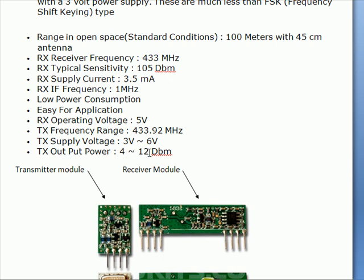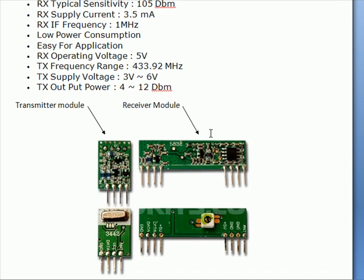The TX operating voltage is about 3 to 6 volts. The power consumption is about this much. This is how we use these modules — interfacing the HT12D and HT12E to the data lines.